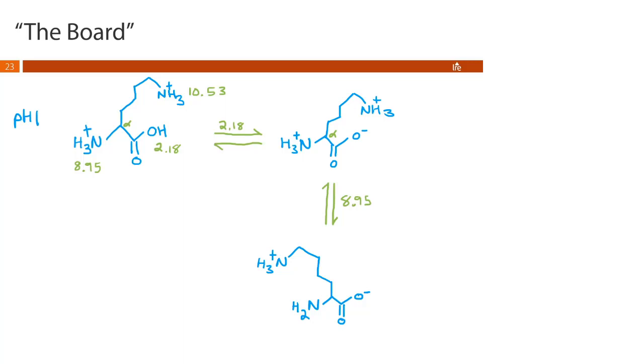Okay now what is our next pKa we're gonna reach? Our next pKa is going to be the side chain amine pKa. So we have 10.53. As we approach 10.53 we're gonna start deprotonating the side chain amine and our species is going to look something like this.